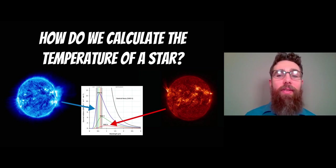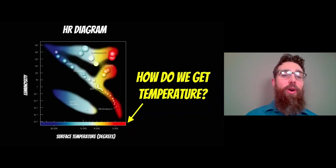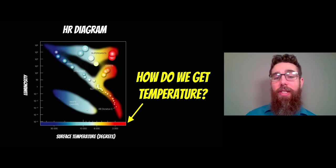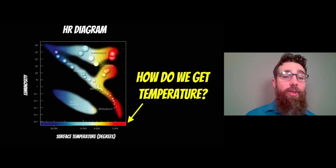Welcome to this video where we're going to look at how we find the temperature of a star. If we revisit the HR diagram, which is a plot of the luminosity of the star against its surface temperature, we get this interesting plot where different types or classifications of stars can be grouped.